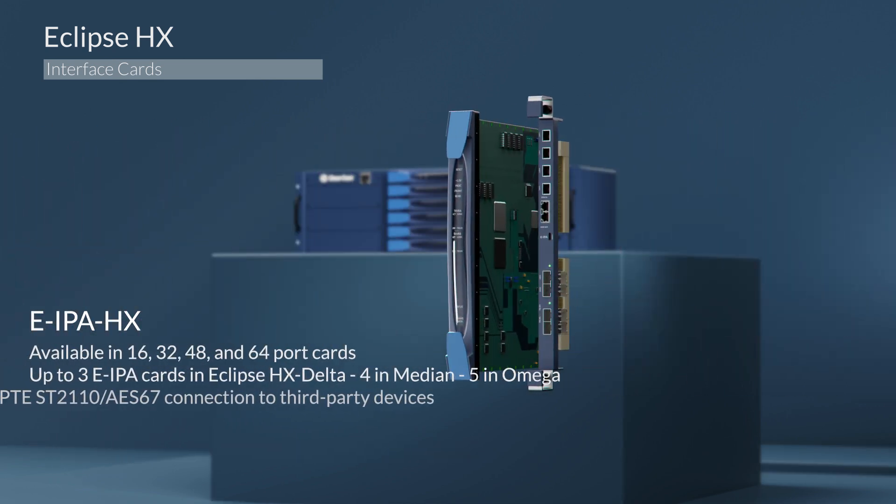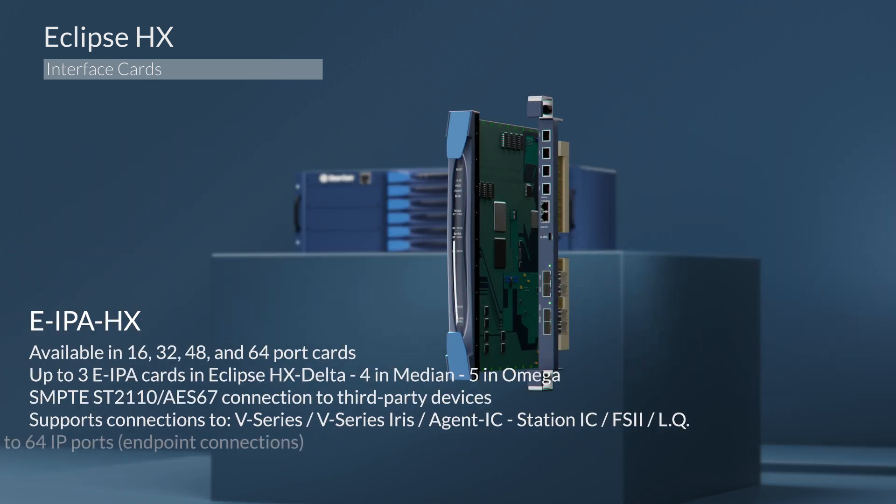Last but not least is the EIPA interface card. Available in 16, 32, 48, and 64 port cards, you have a max of 3 EIPA cards in an Eclipse HX Delta, 4 in Medium, and a max of 5 in Omega frame. You have SMPTE 2110 and AES67 connectivity to 3rd-party devices available in bundles of 8 port licenses. AES67 base connection to V-Series Iris panels, providing an intercom and 2 auxiliary outer channels, along with AES128 encryption.